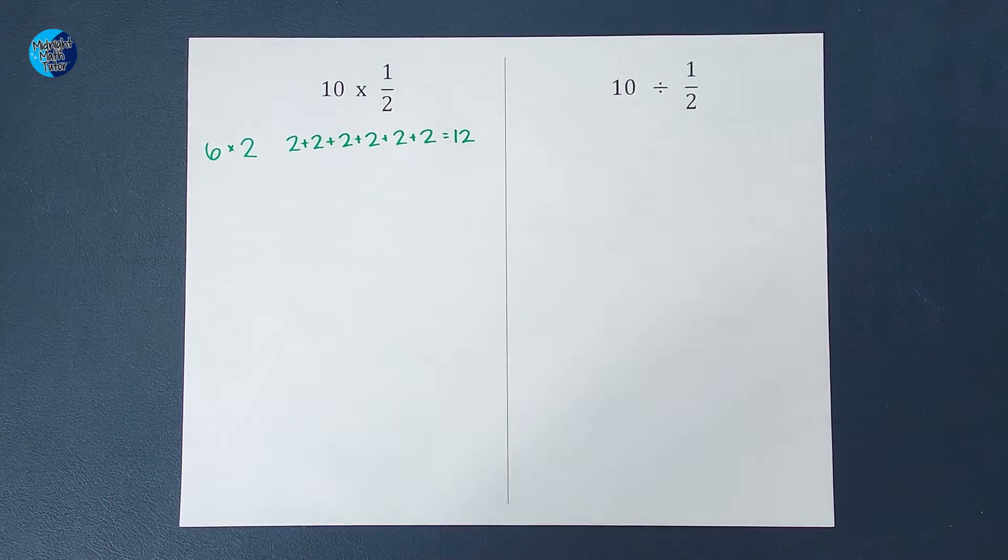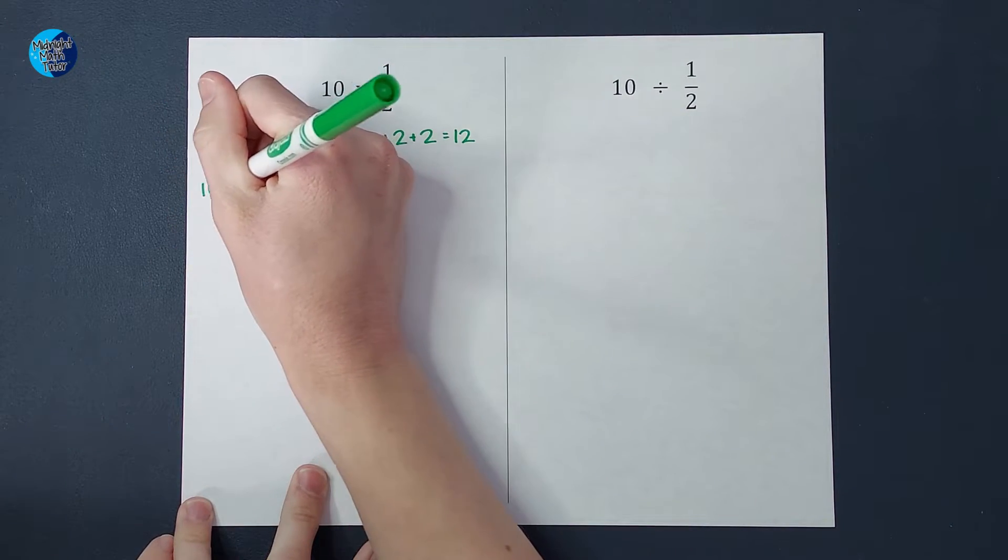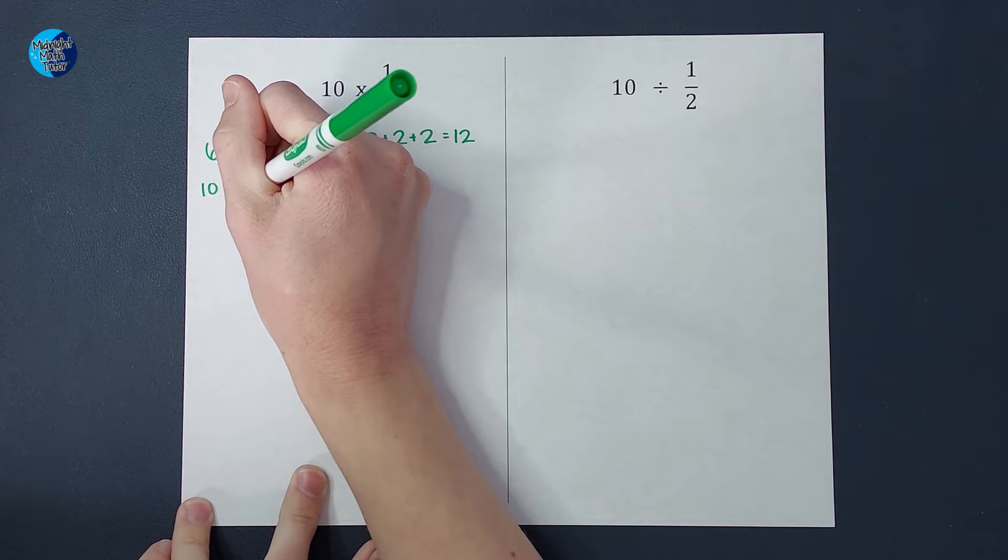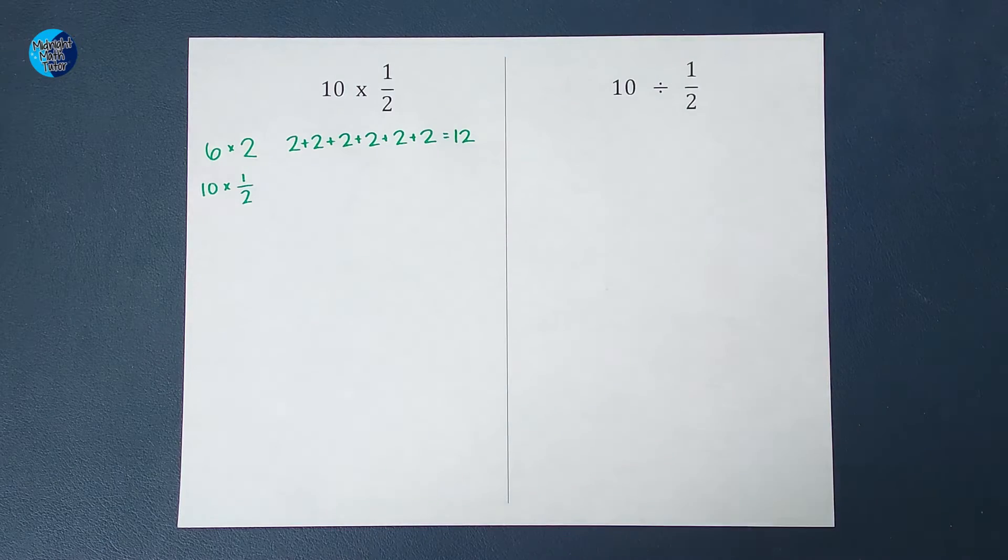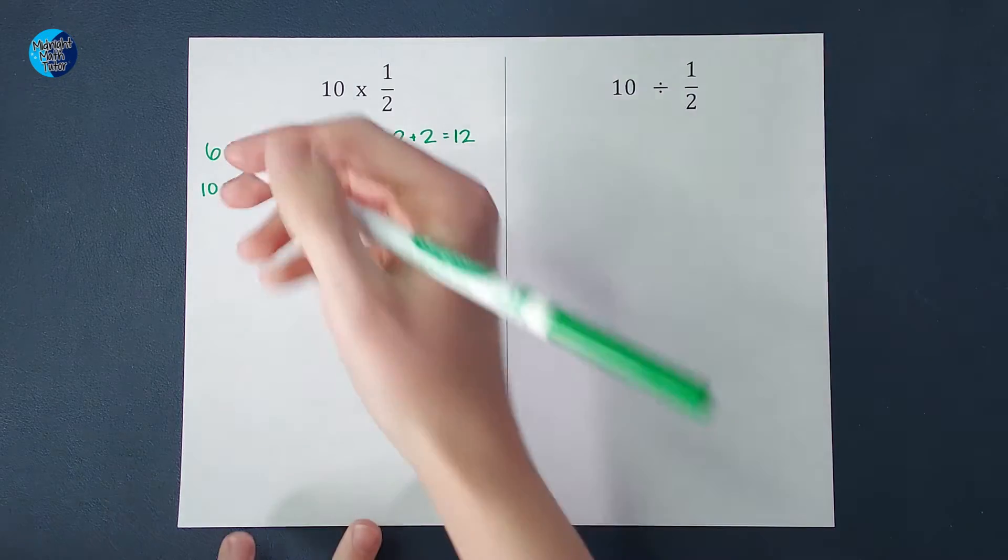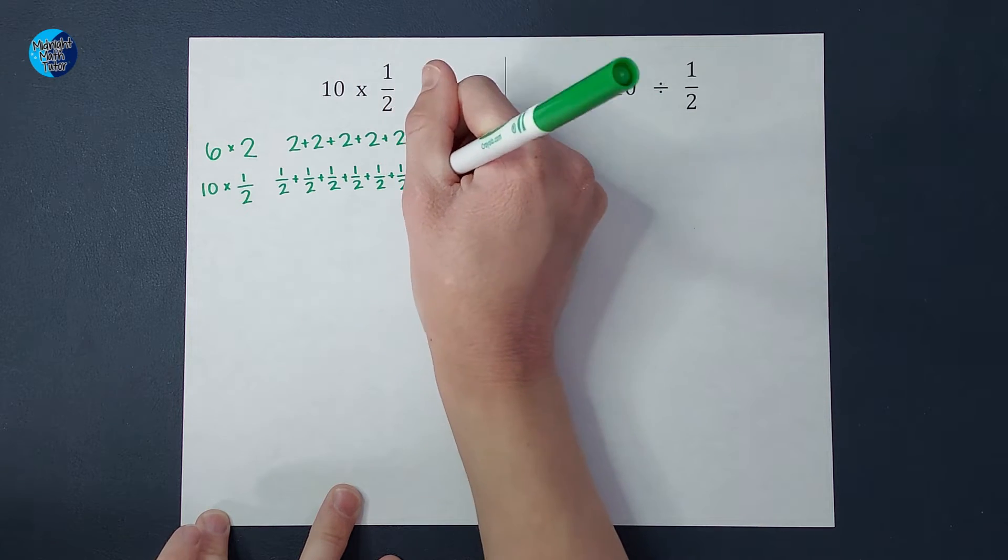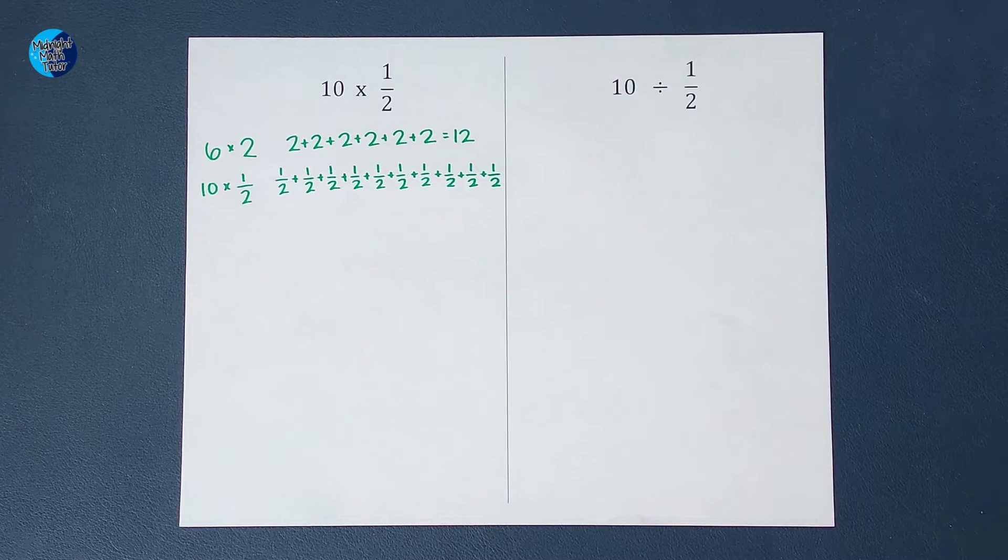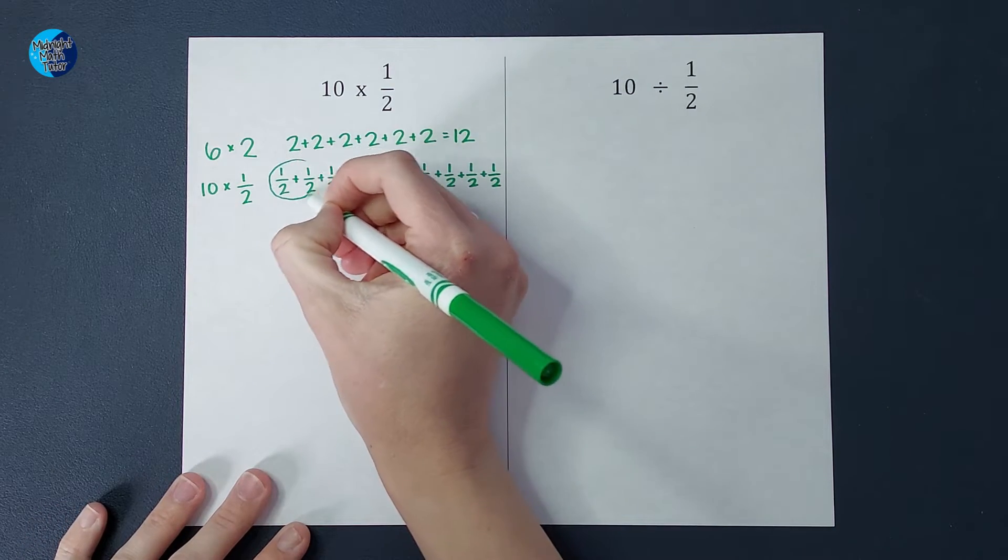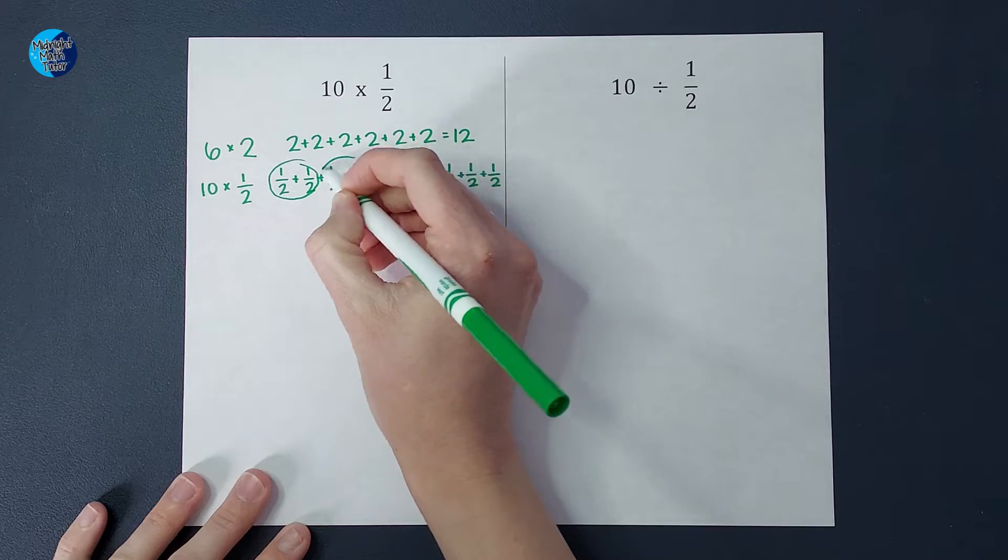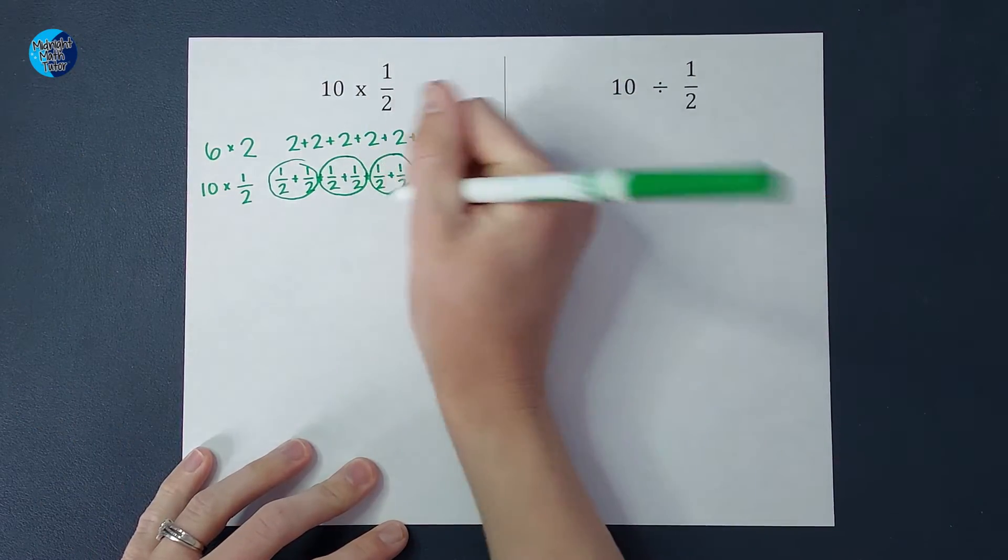Now let's apply that to a fraction because sometimes when we have fractions, we're like, what on earth is happening? So now we're going to apply that to a fraction. So 10 times one half can also mean 10 halves. So when I add 10 halves together, two halves gives me one. So when I add all those together, I end up with five.